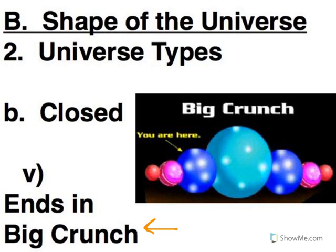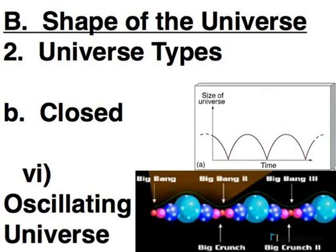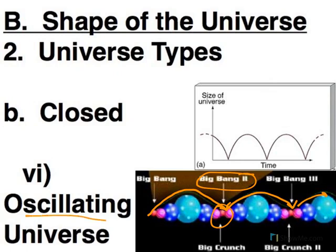However, some hypothesize that that Big Crunch is then going to be a new Big Bang, and that process repeats itself. So it forms, it expands, it collapses. That's a new Big Bang. It expands, it collapses, and it just repeats forever. And that's called an oscillating universe. So this is a universe where the end of one universe sparks the beginning of the next.